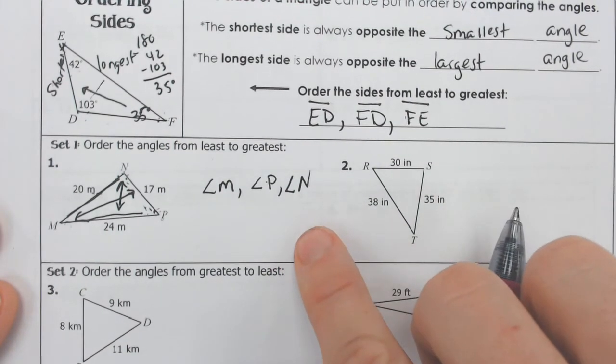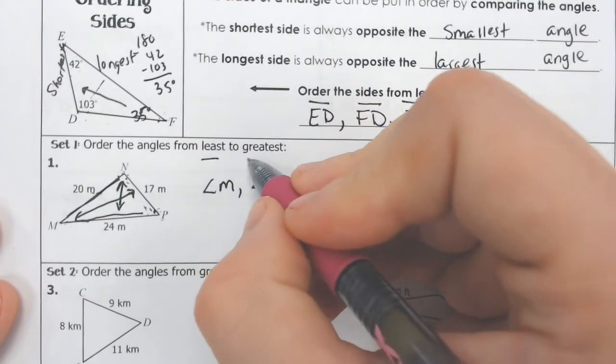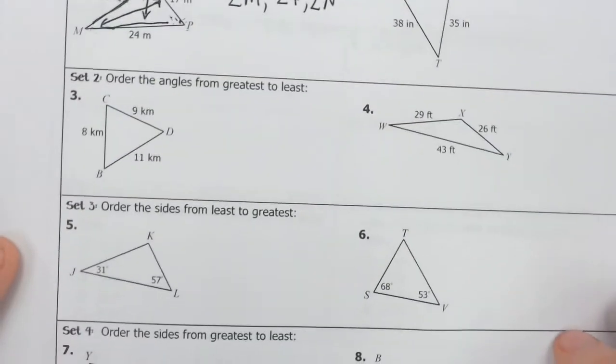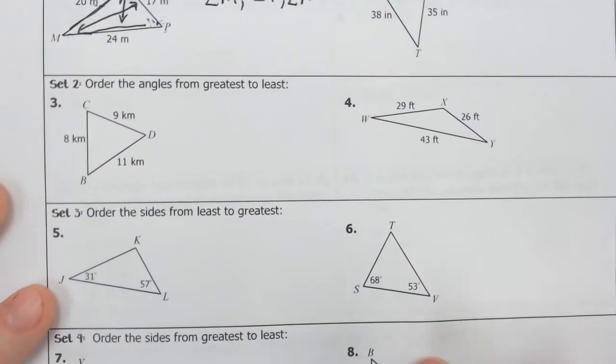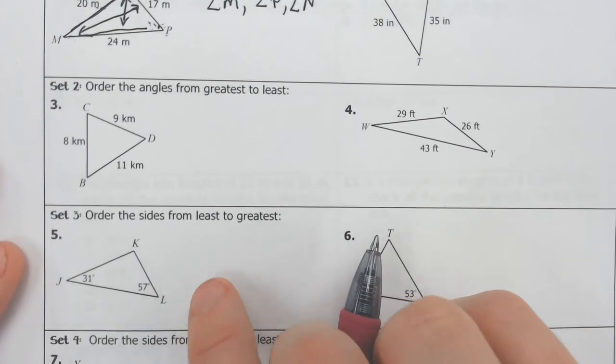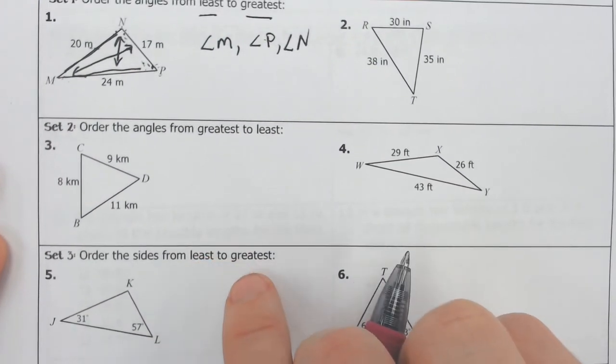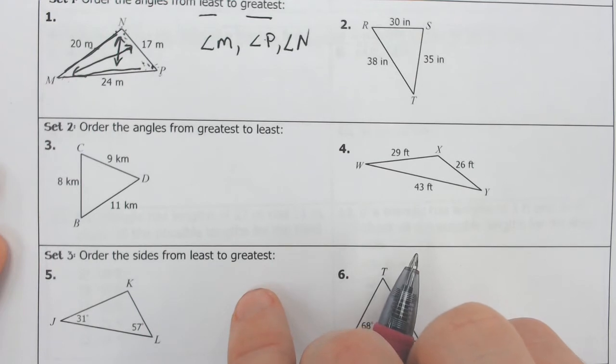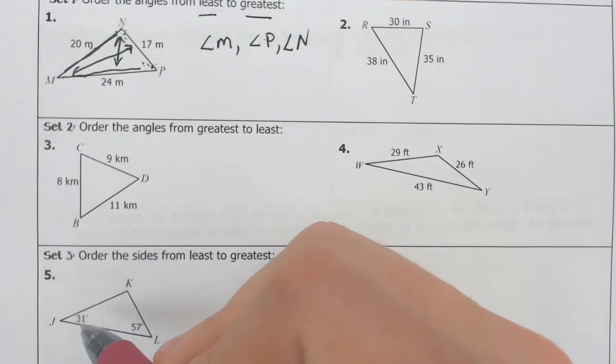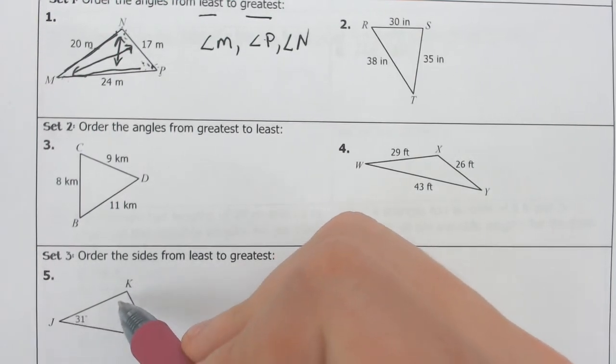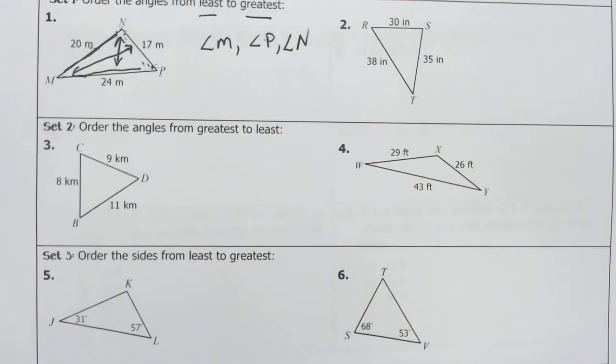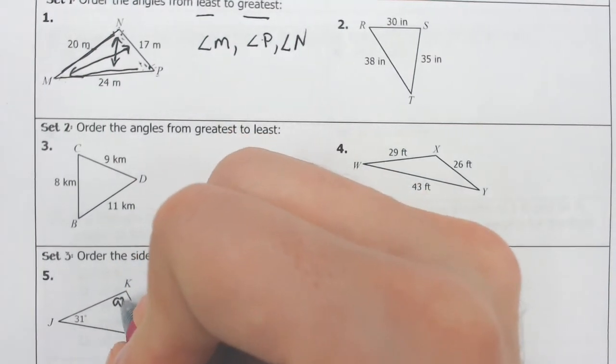That was an example of angles going from least to greatest. If we want to do some sides, no big deal here. We're going to just pick which angles are going to be the biggest and then arrange them from least to greatest based on which angles are bigger and smaller. If we take the 31 and the 57 and we take those away from 180, you're going to get 92 for angle K.